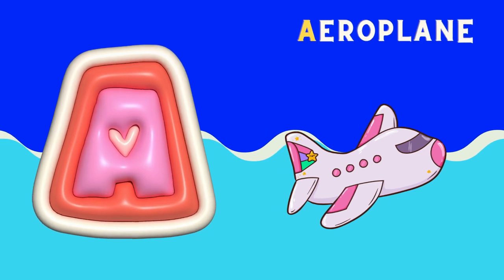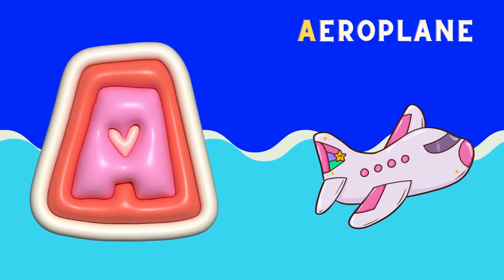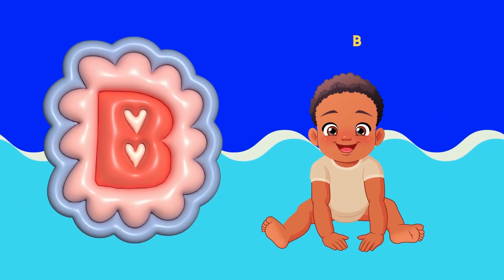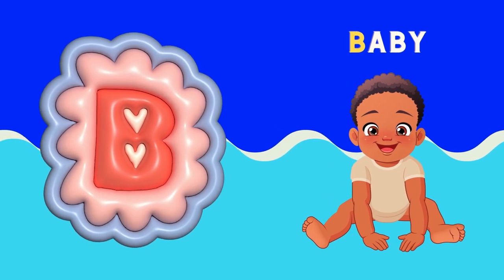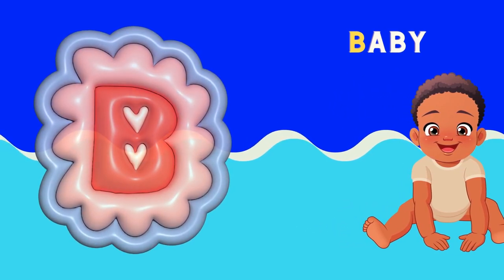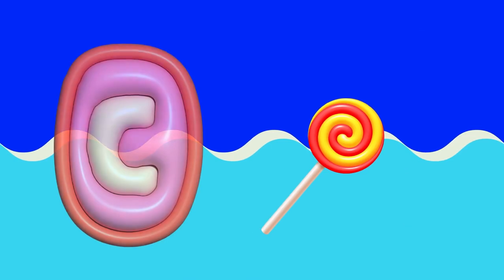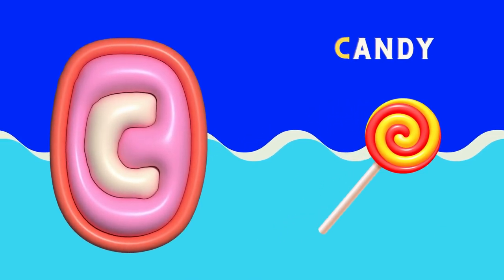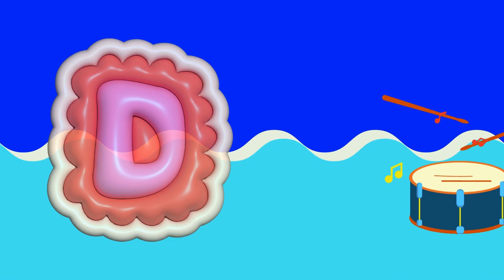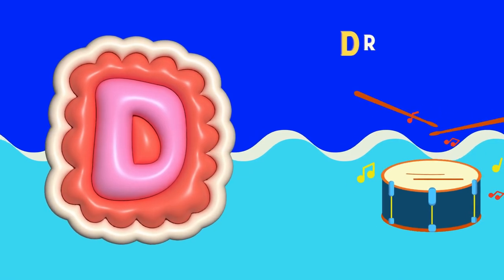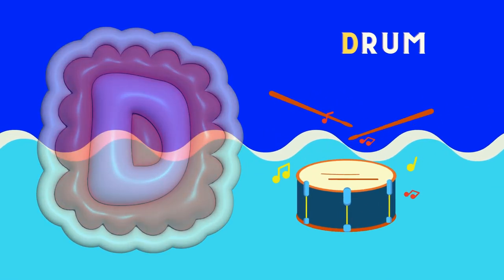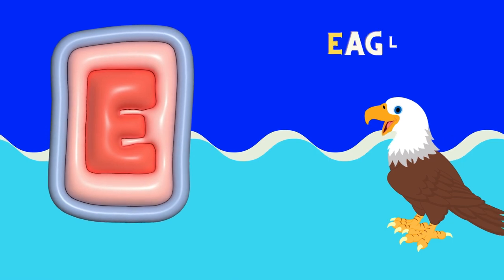A is for aeroplane, B is for baby, C is for candy, D is for drum, E is for eagle.